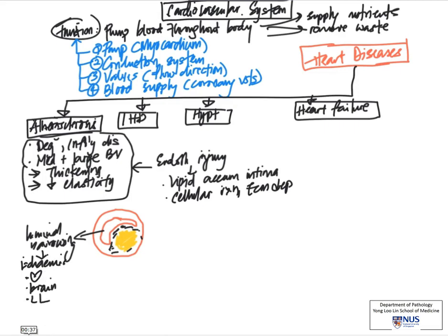If it's a very vital organ such as the heart and the brain, this can have very severe consequences. In the heart, there will essentially be ischemic heart disease, which we'll talk about next. In the lower limbs, sometimes the vessels supplying them can also be narrowed, or there can be thromboembolic phenomenon from reaction to this plaque, and this can give rise to severe pain when walking.